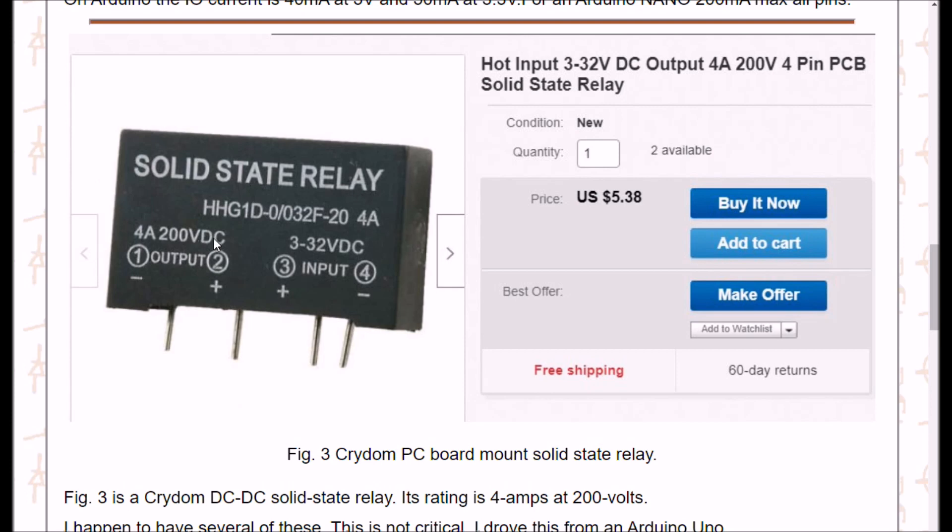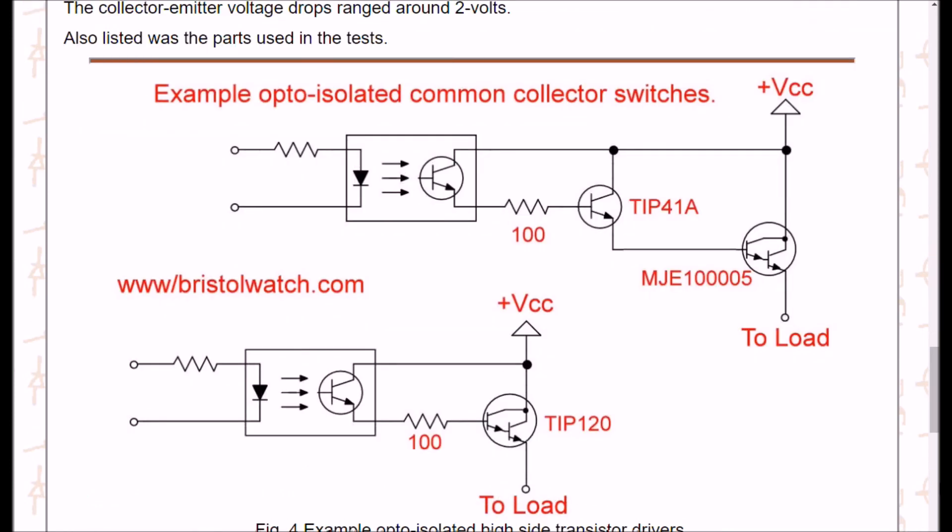If you don't have one of these, you could use one of these circuits that I discussed in a previous video. The easiest one to use is an optocoupler with a TIP120. Remember in your calculations you'll have to subtract about 2 volts that'll be dropped from the collector-emitter of the TIP120.